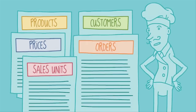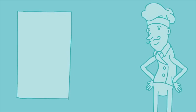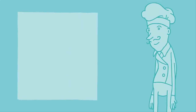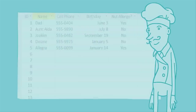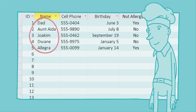Does Access actually keep these things in a big, long list? Not quite. Instead, it uses tables, like the ones in Excel, to list things in a little more detail. Take this example from the amateur baker's database — it lists friends and family, but also important information like who has a nut allergy, and the rest of the table.